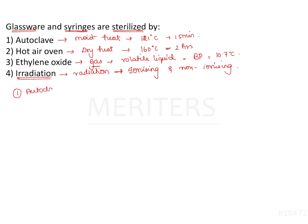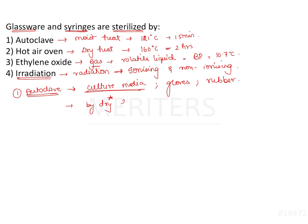Autoclave is mainly used to sterilize culture media — that is a very important point. It also sterilizes gloves, rubber materials, and all materials that cannot withstand dry heat, since dry heat requires about 160 degrees Celsius for two hours.